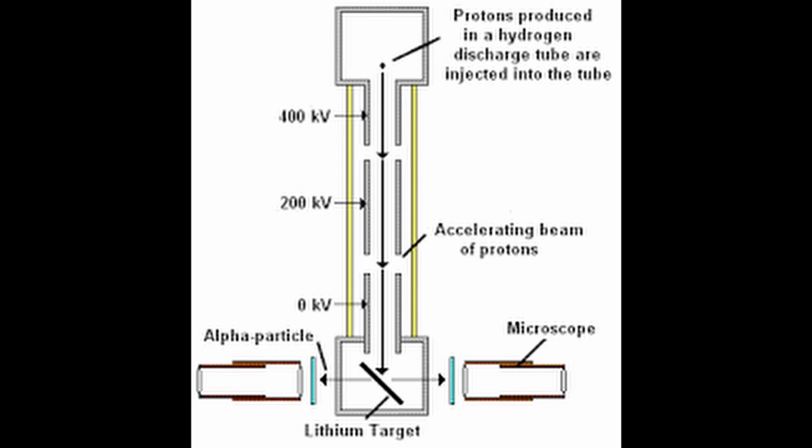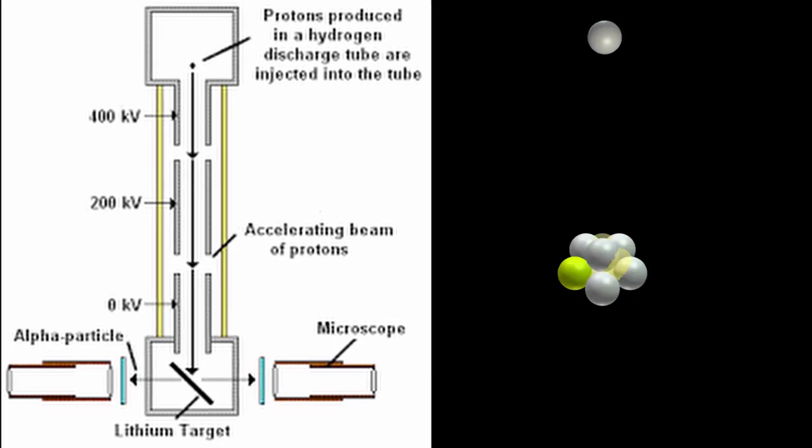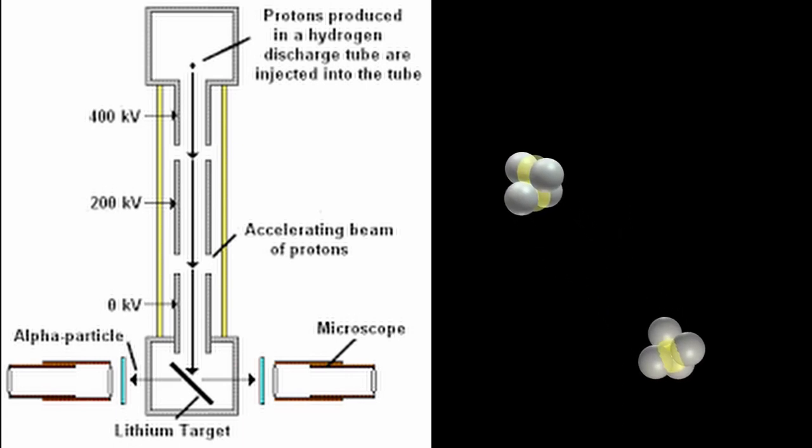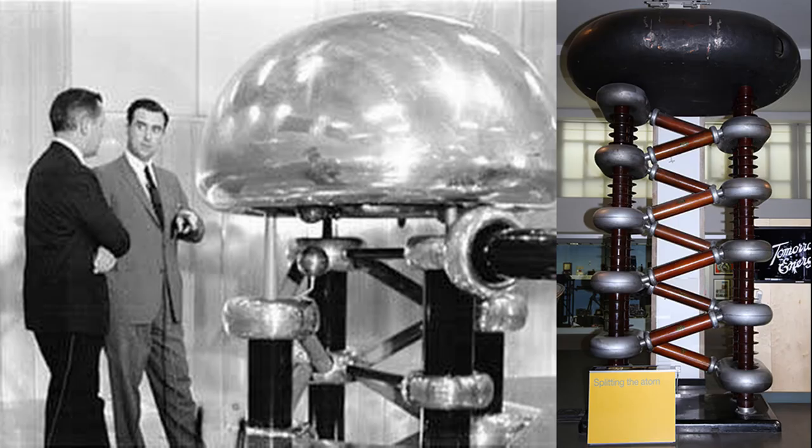By placing the target at the bottom at 45 degrees, they discovered that disintegrations of some of the lithium atoms into pairs of helium nuclei, ejected almost in opposite directions, occurred with only 120,000 volts. And this shows that it does not require as much energy to initiate some of these nuclear reactions.